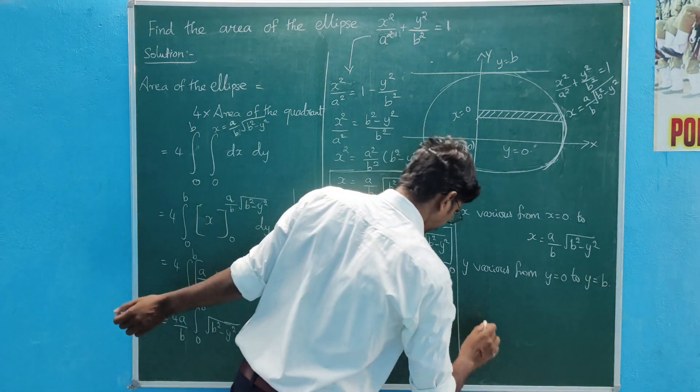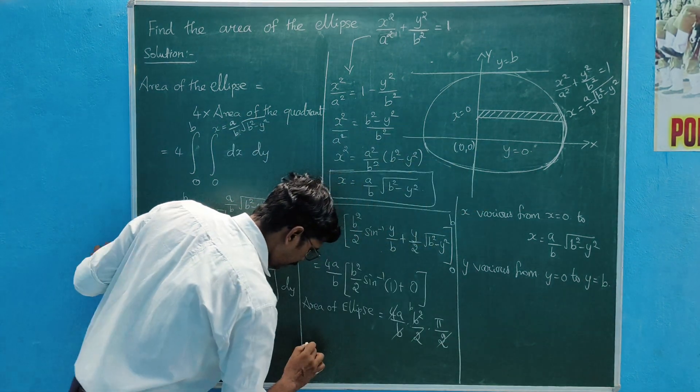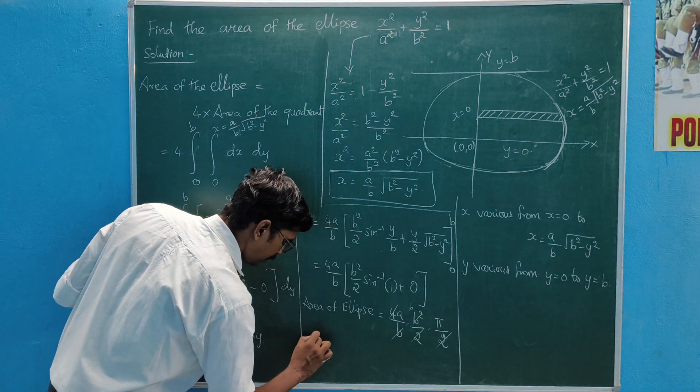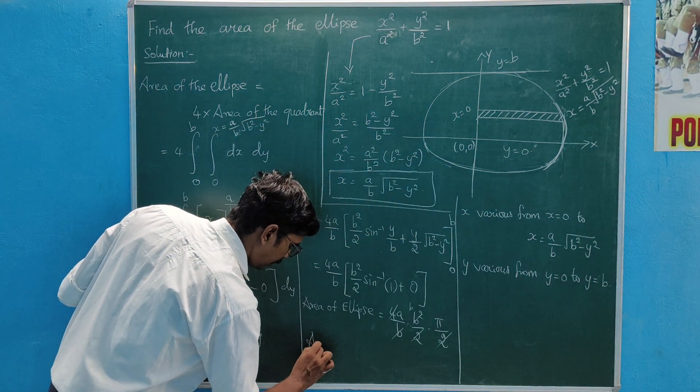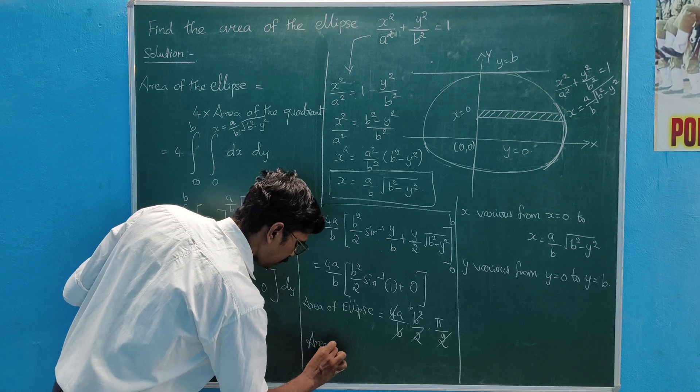Therefore, the area of the ellipse is πab square units.